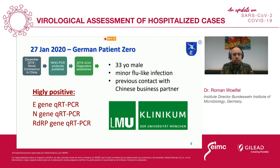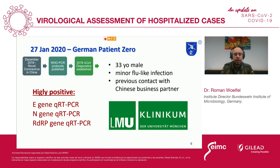He reported a previous contact with a Chinese business partner who was suspected to be suffering from COVID-19 after departure from a business trip in Germany. We tested throat swabs of this patient and found them highly positive in all three assays established at that time: the e-gene, the n-gene, and the RDRP gene assay.